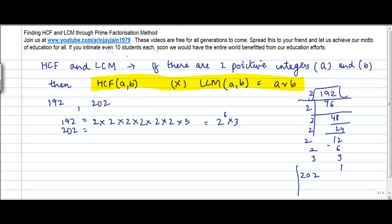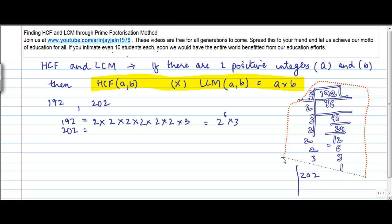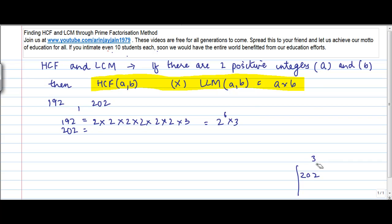Similarly, 202 can be written as... let me just remove this and then do the factorization of 202. I think it cannot go any further. So 2 times 101. Alright.